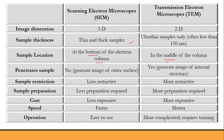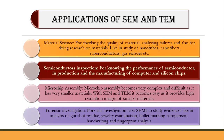In SEM the sample is at the bottom of the column; in TEM it is in the middle. SEM electrons do not penetrate — they generate information from the surface. TEM electrons do penetrate. TEM has more sample restrictions and requires more preparation time; SEM preparation is faster. SEM is less expensive than TEM and easier to operate, while TEM is more expensive and more complicated to use.